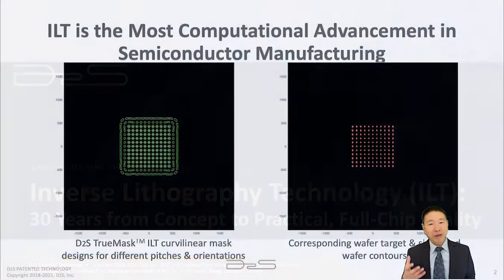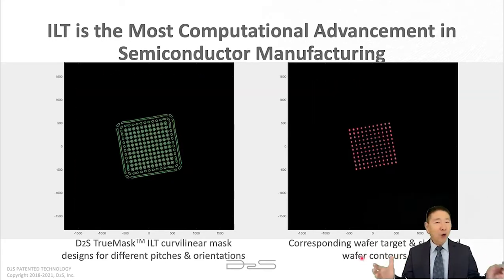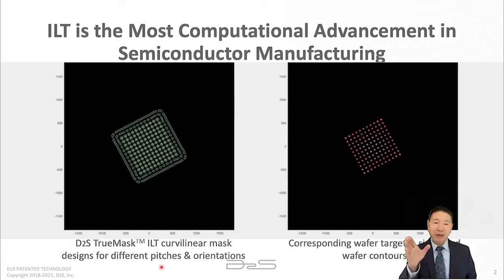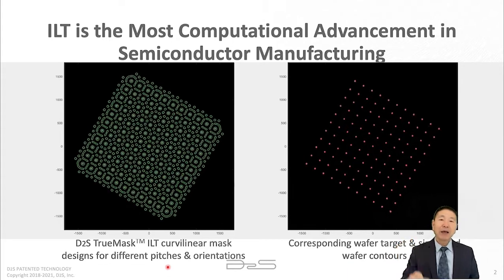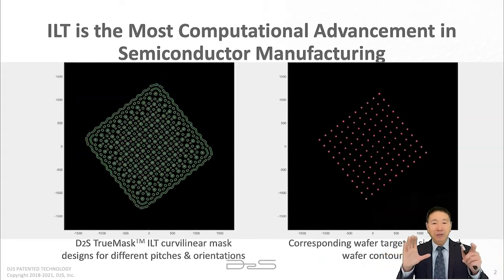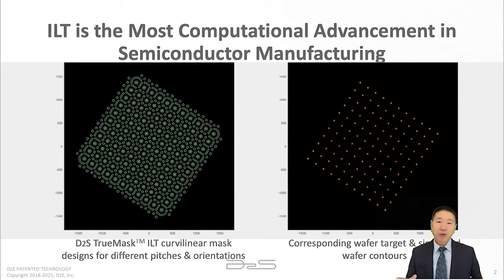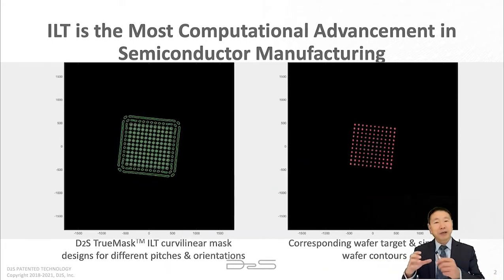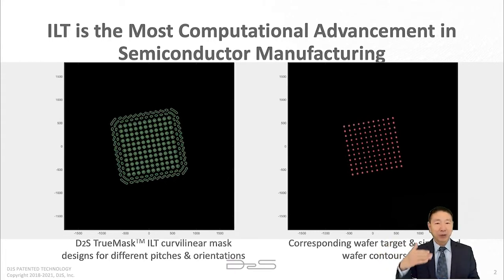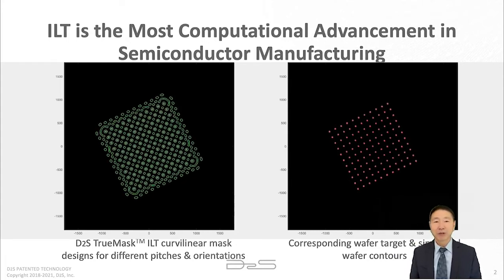Why do we want to talk about ILT? Because ILT is the most computational achievement in the whole semiconductor manufacturing. What you see here on the left is the curvilinear ILT mask pattern. And on the right are pictures of the simulated wafer image. In my talk, you are going to see a bunch of movies — they are a sequence of different configurations put together so you can see the continuity and symmetry of the solution.